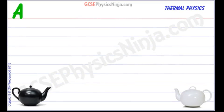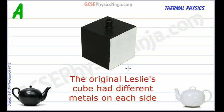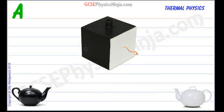Leslie's Cube is a metal box which has its sides painted. It was invented by John Leslie in 1804, a Scottish mathematician and physicist. It enables us to investigate the infrared radiation that's emitted from different surfaces.